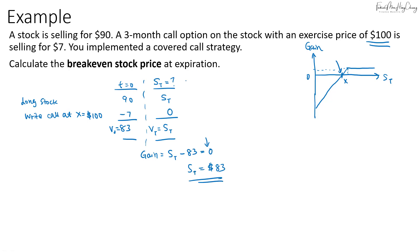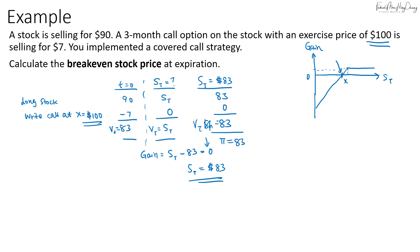We can verify this: substituting $83 into the working, $83 is less than $100 so the call cannot be exercised, and the covered call position value is $83. The change in value is $83 minus $83, giving a gain of zero — confirming that $83 is indeed the break-even price.